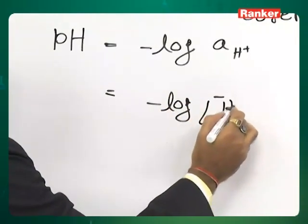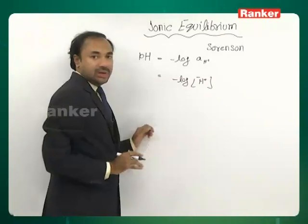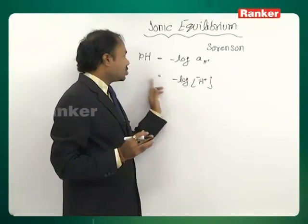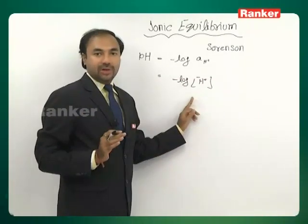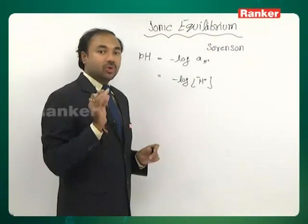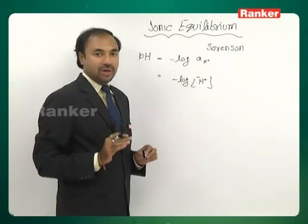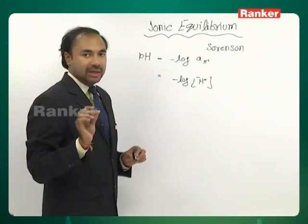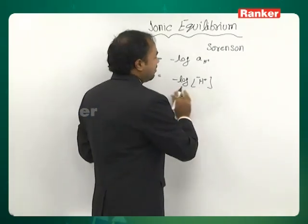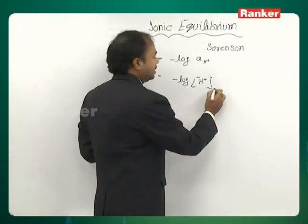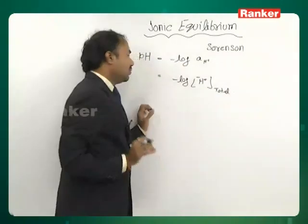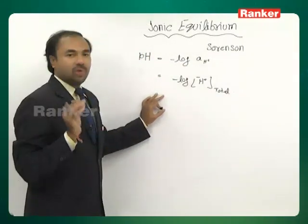Remember, when we talk about the pH of a particular solution, this H⁺ ion concentration has to be the total H⁺ ion concentration present in the solution. So we write pH = -log of total [H⁺].